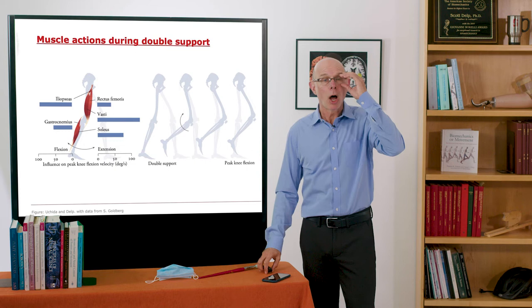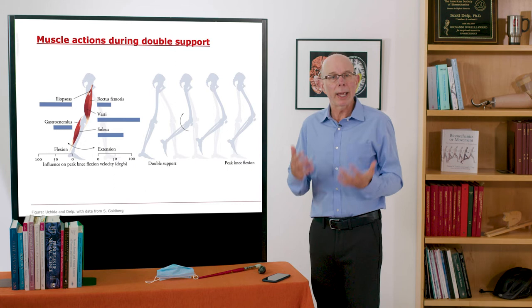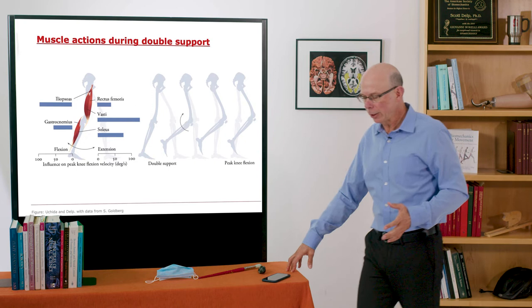Now we saw from the ballistic walking model and the dynamic walking model that swing can be thought of partly as a passive activity. If you get the initial conditions right for swing, you can just fly through the air and have a successful swing.